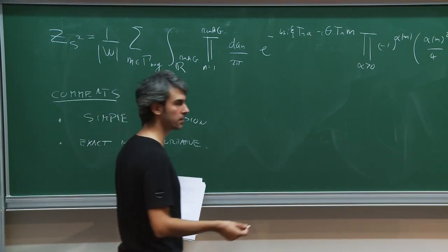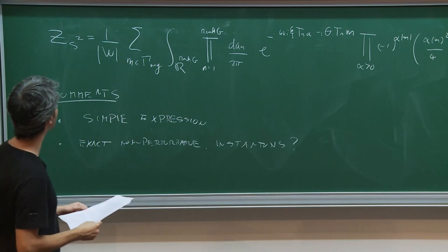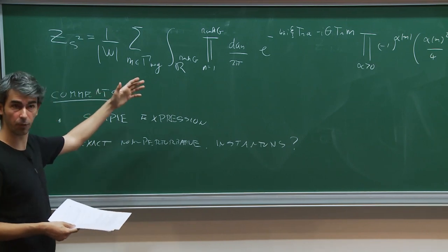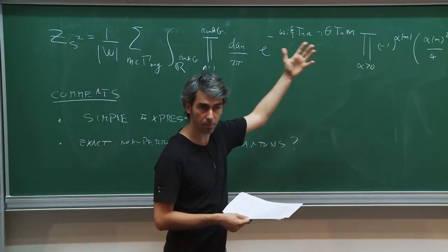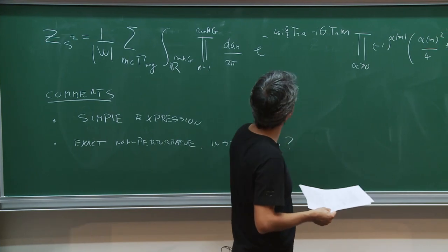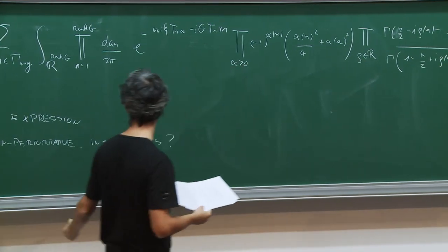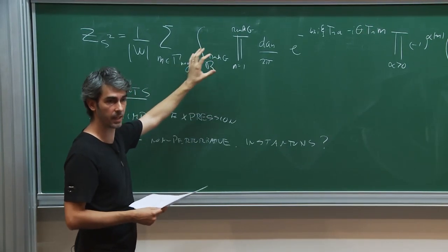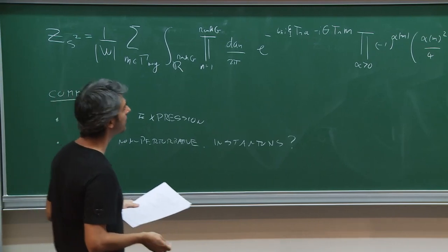One might ask: where are the instantons? This expression is an exact non-perturbative result, so it should contain all instanton corrections. The expression is a bit different from what you get on S⁴ — in that case you also have to include all non-perturbative corrections computed in some other way. But here we don't find extra non-perturbative corrections; in some sense it might seem like this is just perturbative, but in fact this expression does already contain the instantons, though they are not manifest.